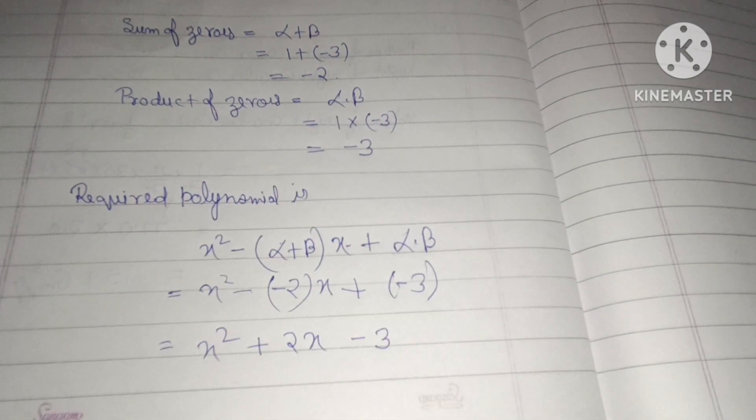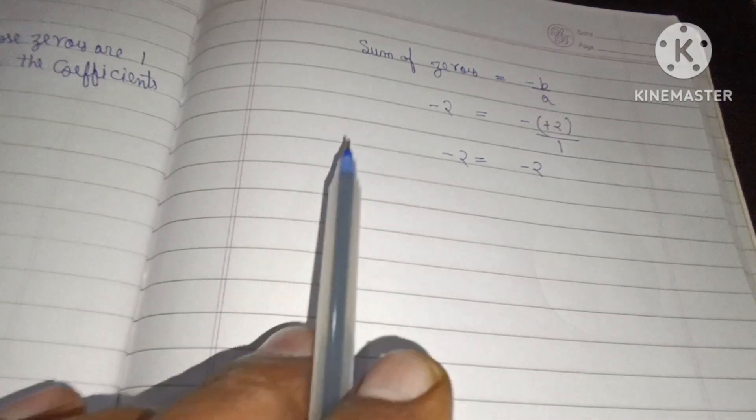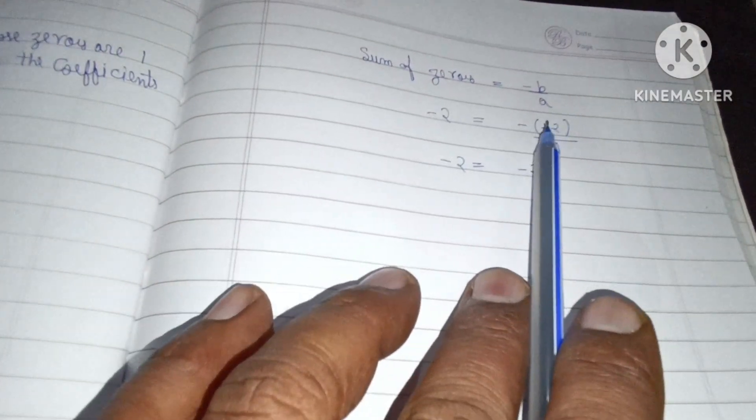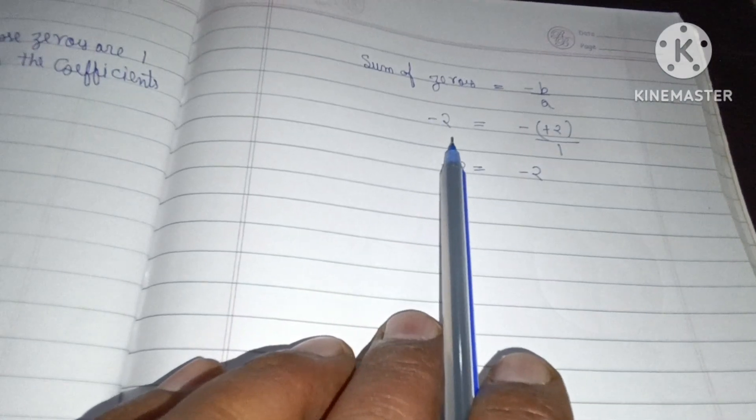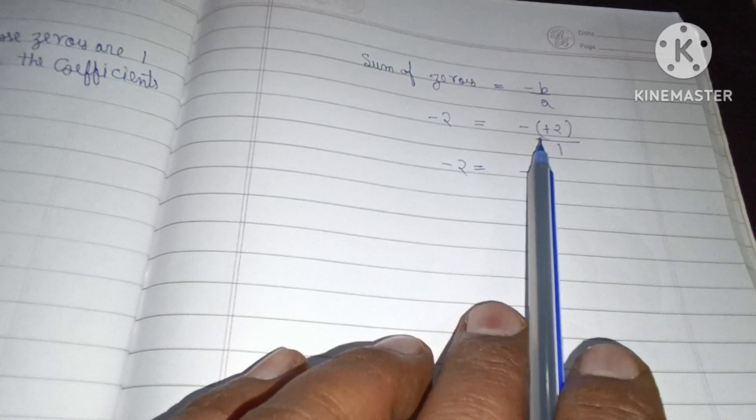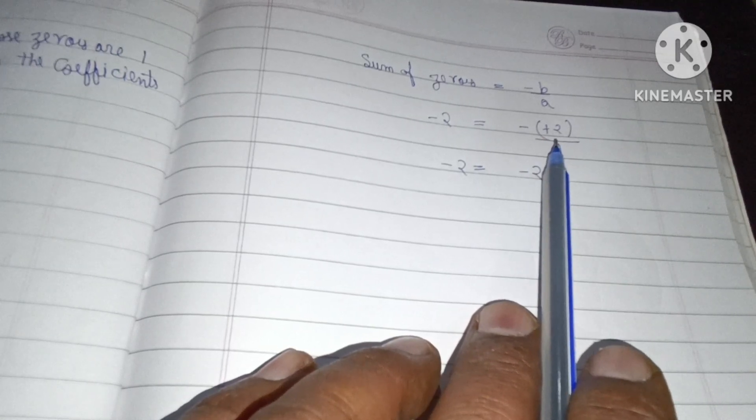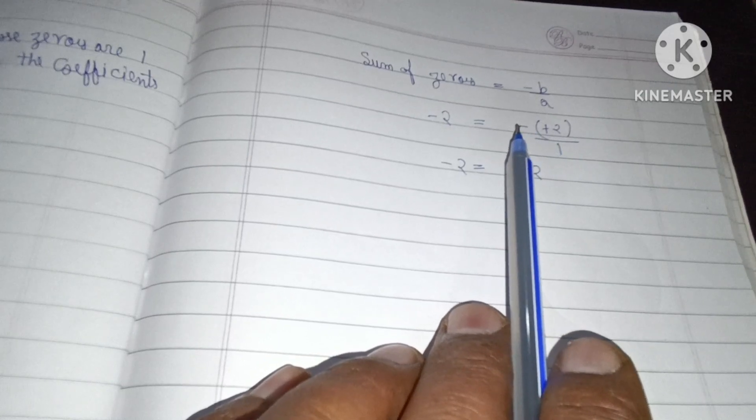Yahi hamari required polynomial hogi. Sum of zeros hoga minus b upon a. Sum of zeros ne find kiya tha minus 2, aur x ke coefficient mein jo hai vo 2 hai, to b ho jayega 2, bahar minus ka sign hai upon 1.